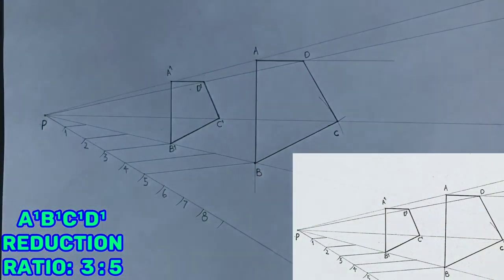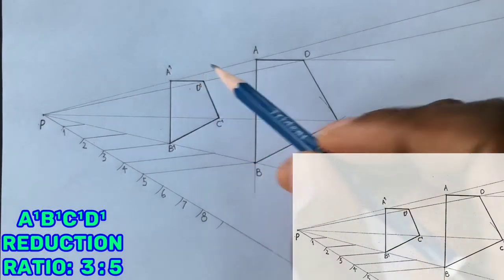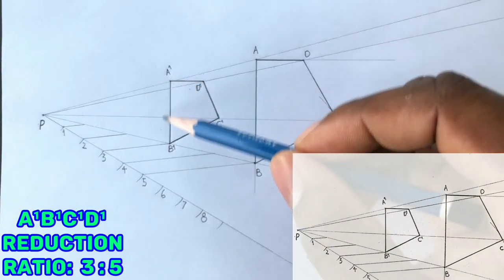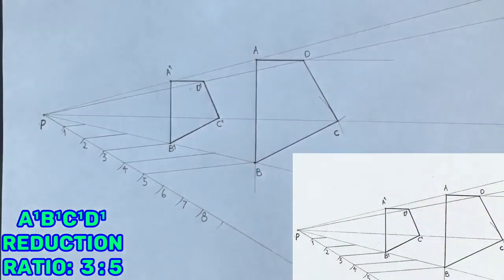Now we have just reduced your given quadrilateral A, B, C, D to get A1, B1, C1, D1.